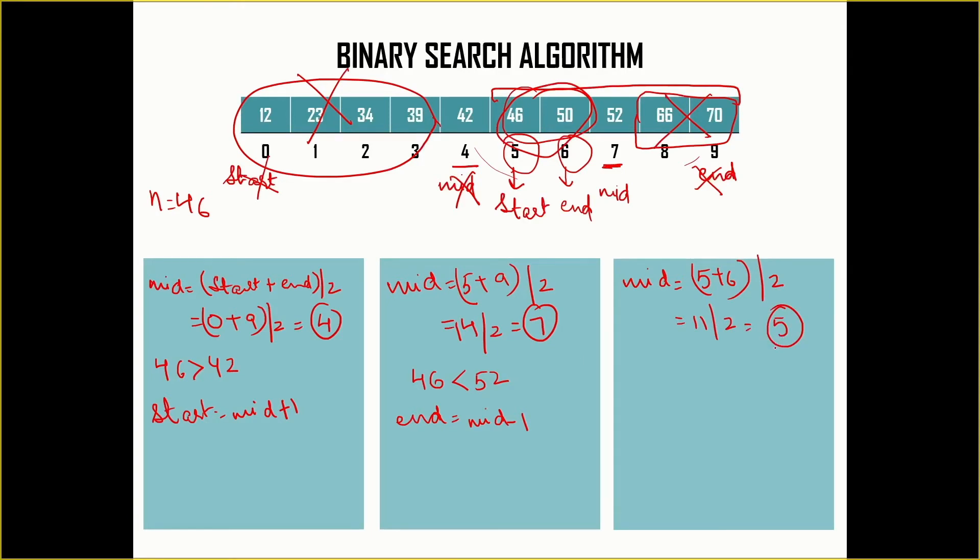The element available at this middle position is 46. The number which was actually assigned to n, which was 46, is now available at the middle position in the array. So my element has been found and this completes my searching algorithm. You can clearly see in just three steps we have got our number 46 according to binary search algorithm.